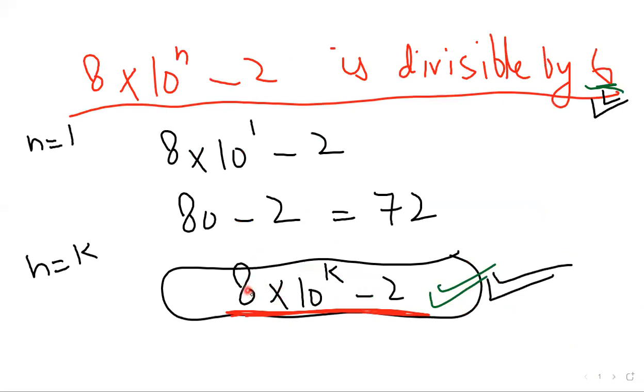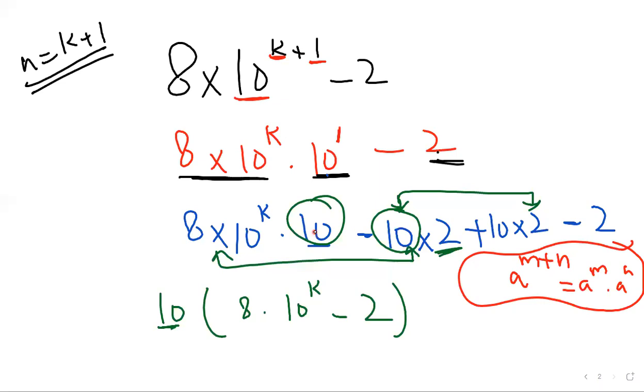We need to make it like this: 8 into 10 to the power k. It means that this 10 is extra, but the problem is that on the very next term we need minus 2 as well. So that's why I introduced the 2 as well. 10 and 2, which becomes 20. Whatever we are subtracting we should be adding.